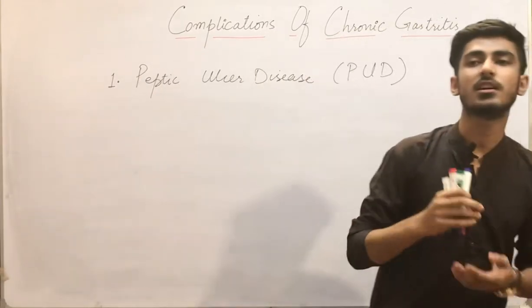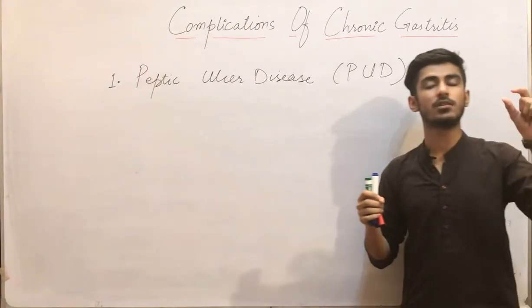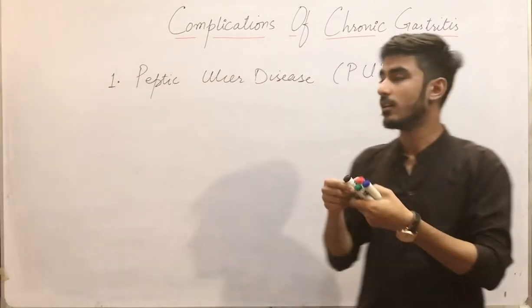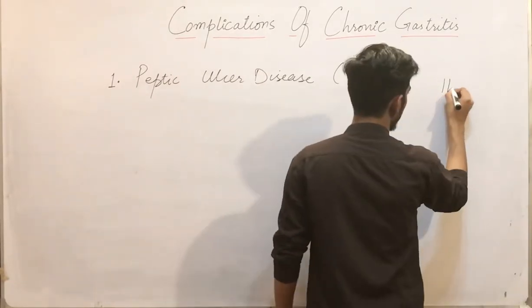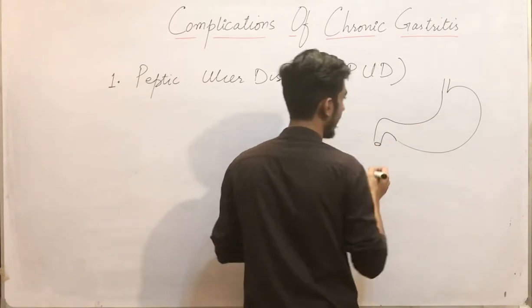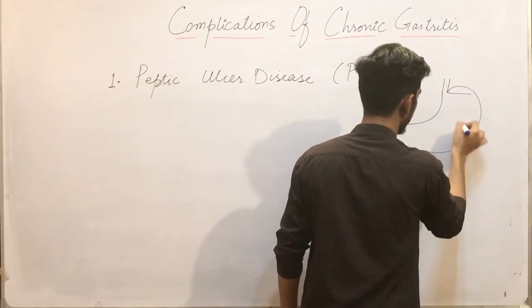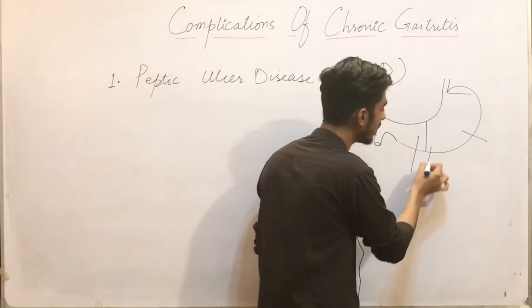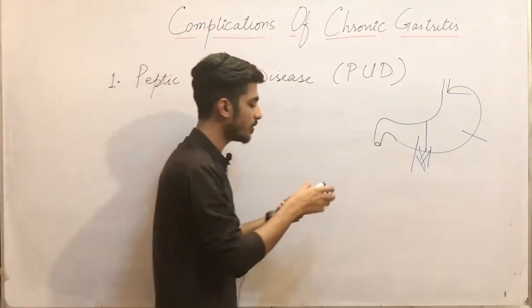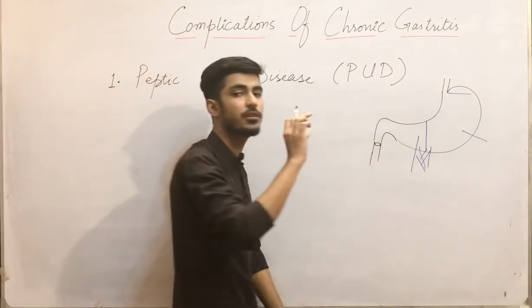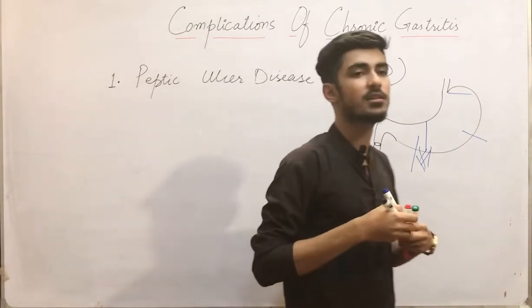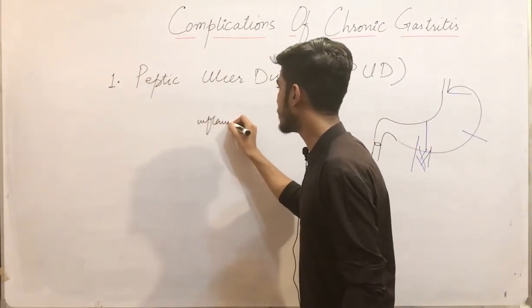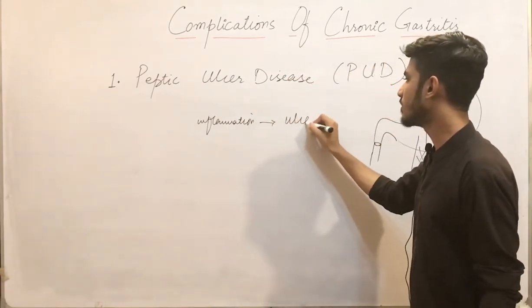Peptic ulcer disease may occur in the stomach or in the duodenum, specifically in the proximal part of the duodenum and mainly at the lesser curvature of the stomach — at the interface between the body and the antrum. This is your stomach: this is the fundus, this is the body, and this part is the antrum. The ulcer is found in the proximal part of the duodenum as well.